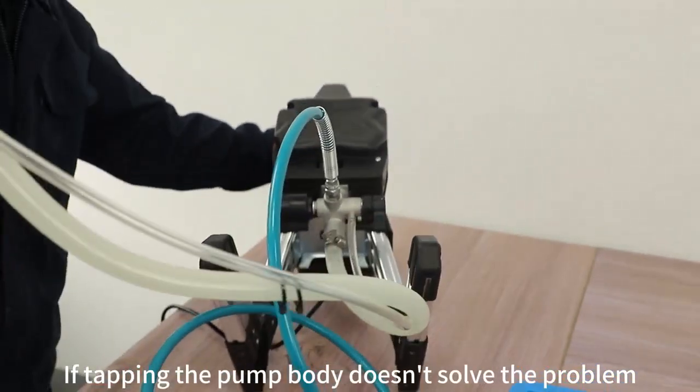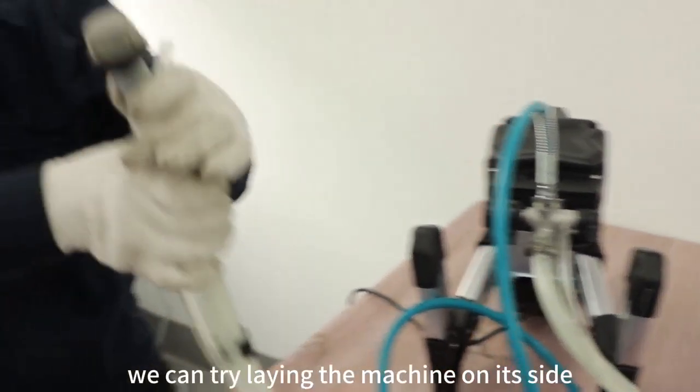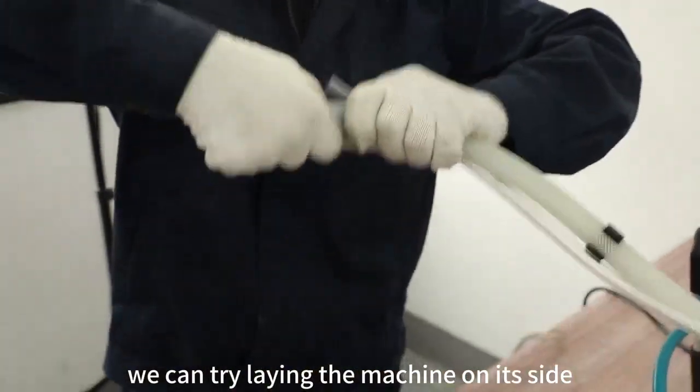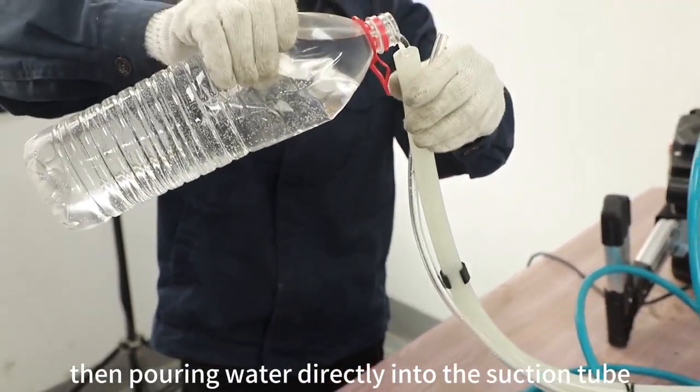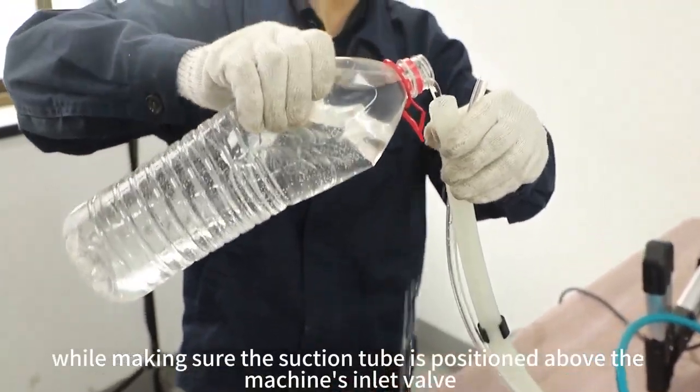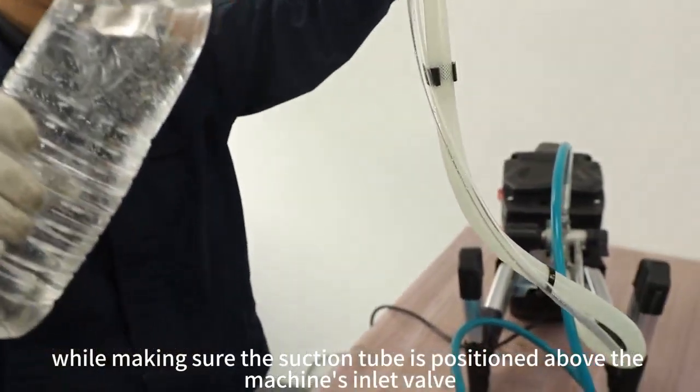If tapping the pump body doesn't solve the problem, we can try laying the machine on its side, removing the suction filter, then pouring water directly into the suction tube, while making sure the suction tube is positioned above the machine's inlet valve.